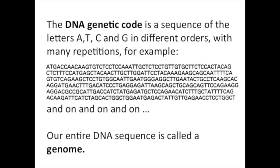For example: A, T, G, A, C, C, A, A, C, A, A, G, T, G, T, C, T, C, T, C, C — and on and on and on. Our entire DNA sequence is called a genome.